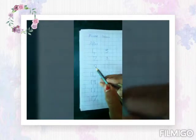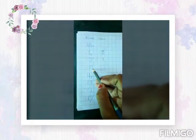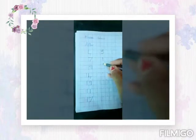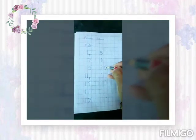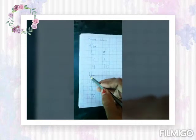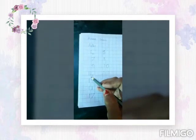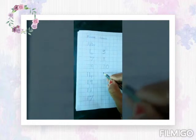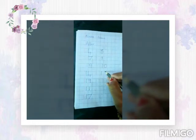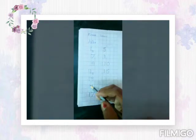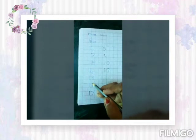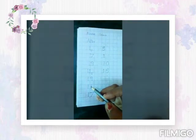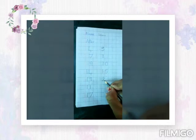Now children, what number is this? Number 9. What comes after number 9? 10. Now what number is this children? 14. What comes after 14? 15. Now what number is this children? 19. Now what comes after 19? 20.